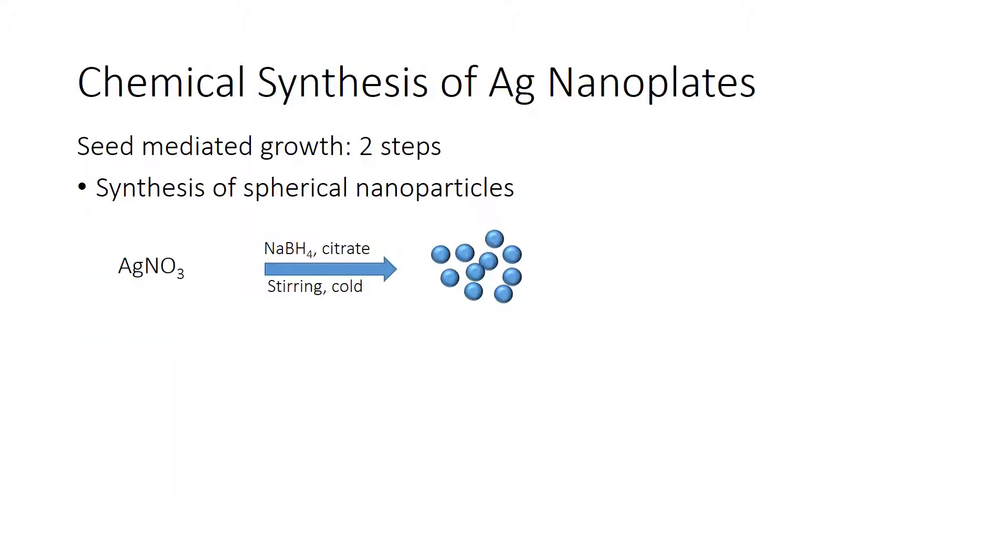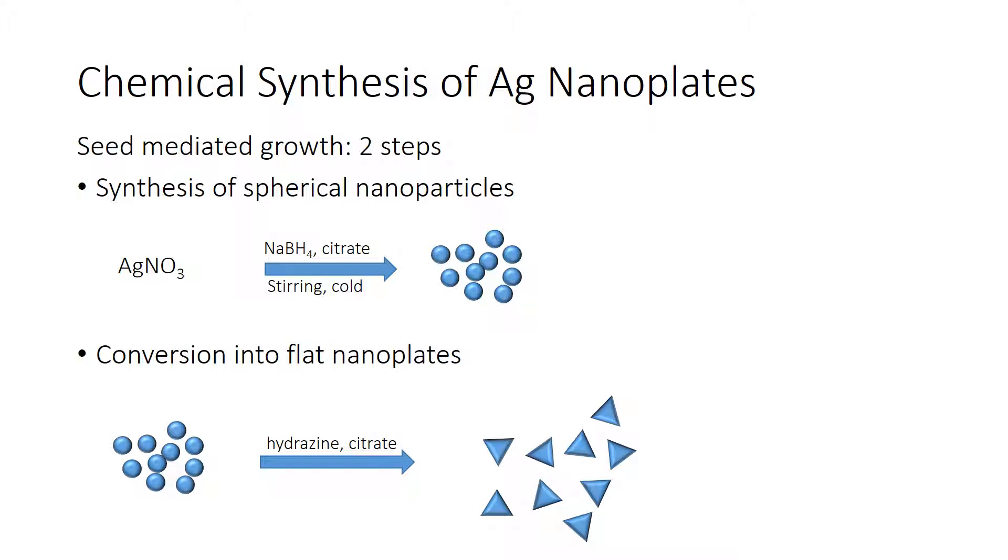The synthesis of silver nanoplates happens through a two-step process, which is called seed-mediated growth. The first step is the synthesis of spherical nanoparticles. This starts from silver ions in solution, uses a strong reducing agent like sodium borohydride, and also uses citrate and cold temperature.